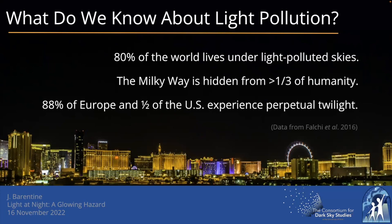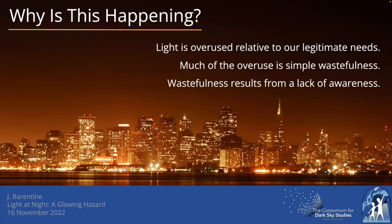An example of an environmental effect we can attribute to light pollution is sky glow, which brightens the night sky and makes it difficult to see the stars. Visibility of the Milky Way is an indicator of a sky relatively free of light pollution. About a third of people live in places where they cannot see the Milky Way under any circumstances. Perhaps most striking is that almost 90 percent of Europeans and more than half of the U.S. population experience a perpetual twilight — the sky never drops below the brightness you'd experience in the hours around dusk and dawn.